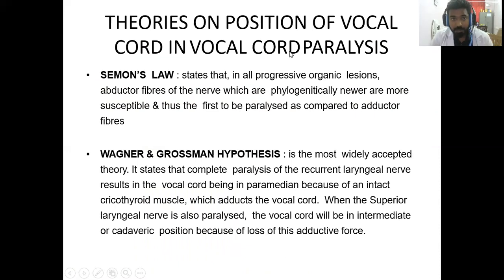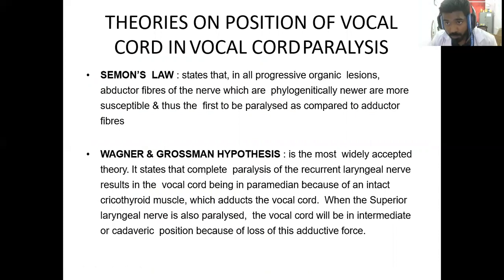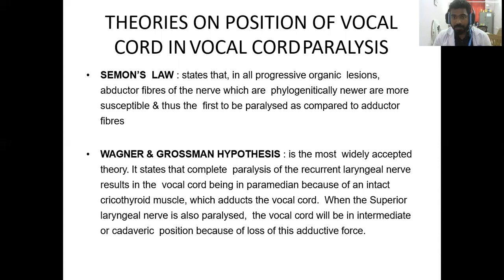There are two laws that determine the position of the vocal cords in vocal cord paralysis. First is Semon's law, which states that in all progressive organic lesions, abductor fibers of the nerve — which are phylogenetically newer — are more susceptible and thus first to be paralyzed as compared to adductor fibers. So the first thing that gets paralyzed is the abductor fibers, and later the adductor fibers.